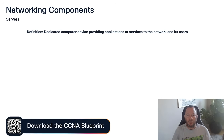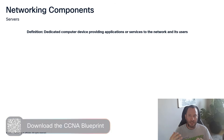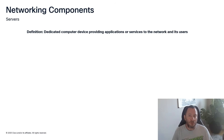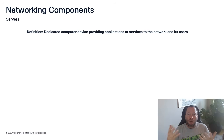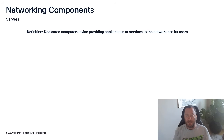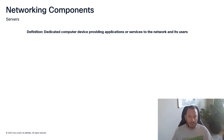Next, you have servers. If you've ever gone to a restaurant and ordered food, the person who takes your order and brings you food is called a server because they're bringing something to you. On a network, a server is a device that serves up some kind of resource — for example, a web server displaying a web page. In either case, you're requesting a network resource.